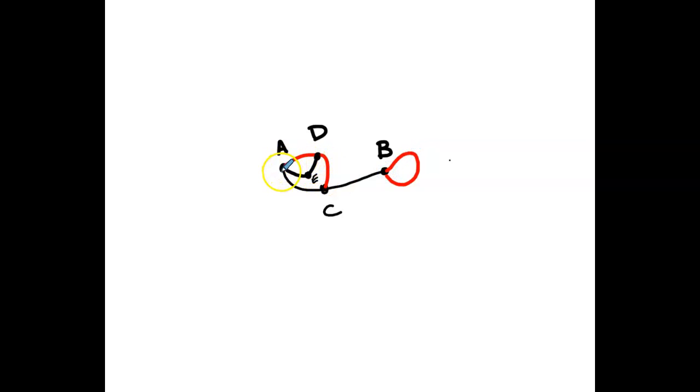And the rule here is that any point can only be connected by at most three rays. So, for example, A has three rays coming out of it. D has three lines coming out of it. E only has two, so it still has another life, we would say. C has three. B has two.